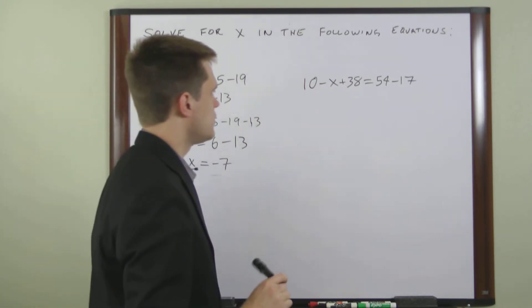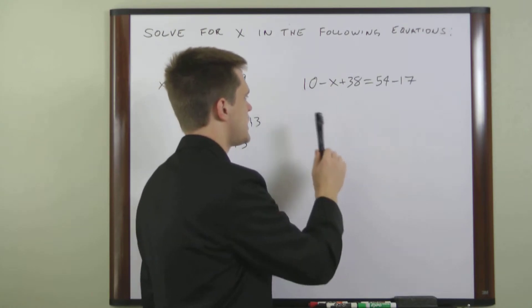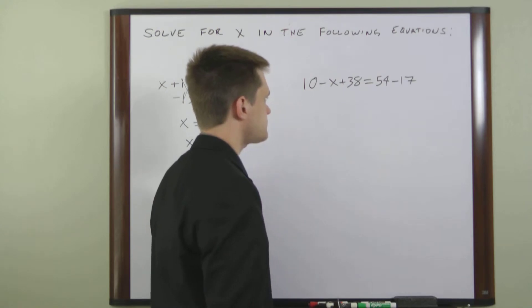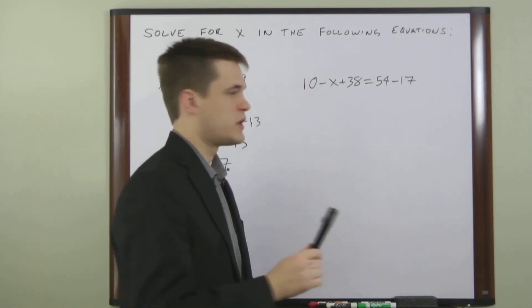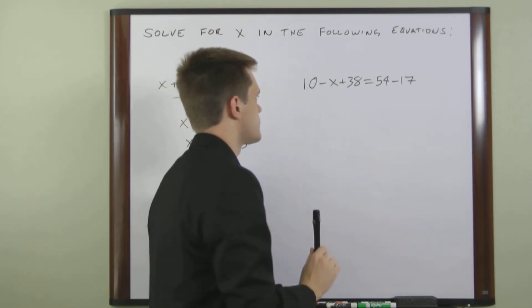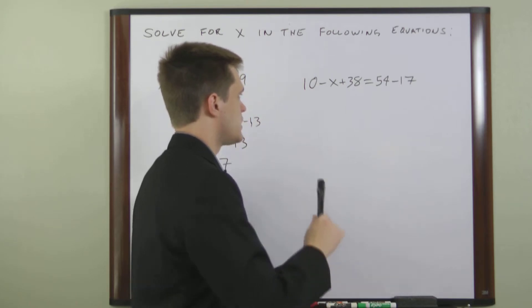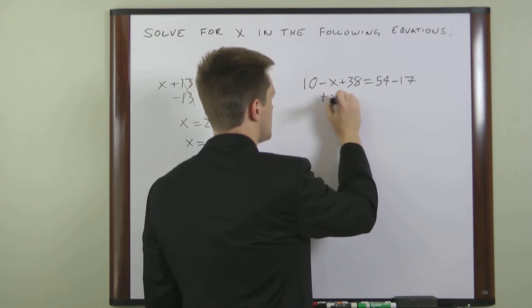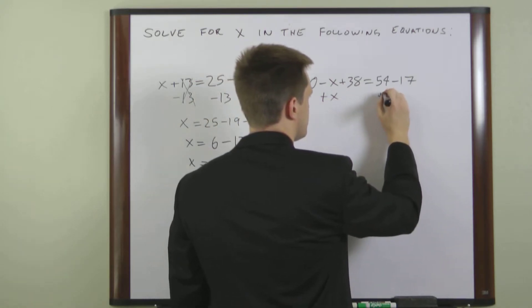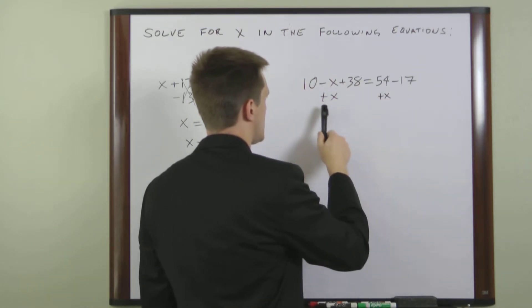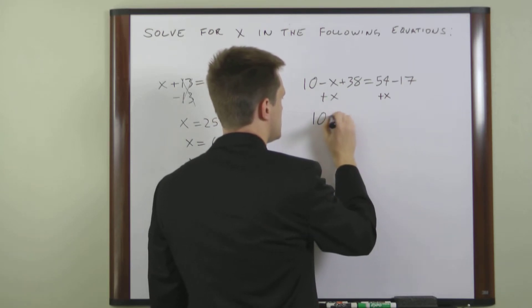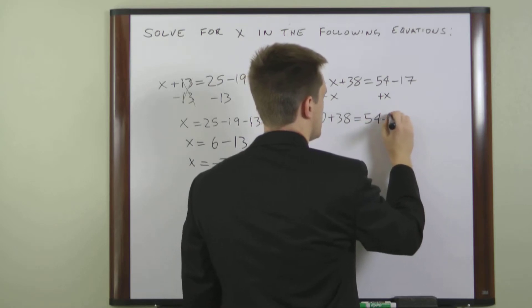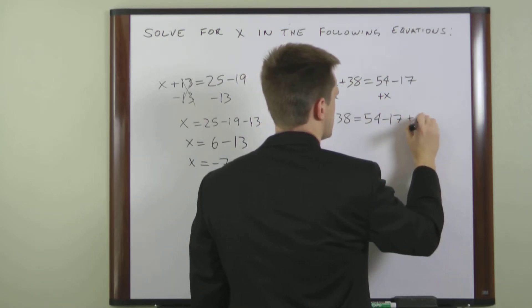In the second example, we have 10 minus x plus 38 equals 54 minus 17. Now in this equation, we have a negative x. So the first thing we want to do is get x to be positive. To do that, we can add x to both sides of the equation. And that'll give us 10 plus 38 equals 54 minus 17 plus x.